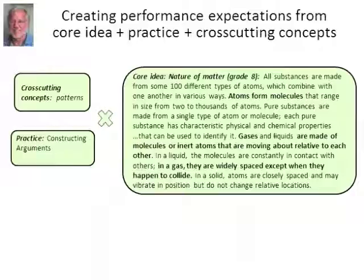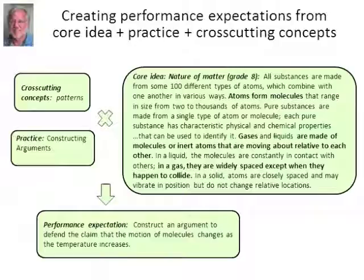This is a core idea taken from the grade-band endpoint for the nature of matter. It talks about how all substances are made up of atoms and that these atoms form molecules, and of course there are liquids and gases, etc. The way you get these performance expectations is you cross them — I like to use the word 'cross' — with a cross-cutting concept. In this case it's patterns, and since today we're talking about arguments, I'm crossing it with the practice of constructing arguments using evidence. And when you do that, you end up with a performance expectation.